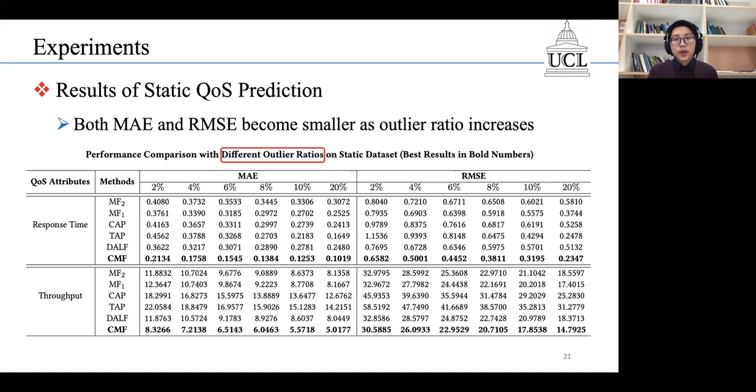We also noted that both MAE and RMSE take a smaller value when outlier ratio increases. This is because when more outliers are removed from the dataset during the testing phase, the evaluation will be more accurate. So we can conclude that it is essential to remove outliers to make the MAE and RMSE able to truly reflect the prediction performance.